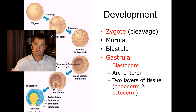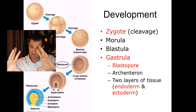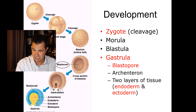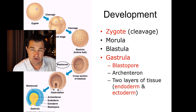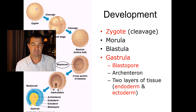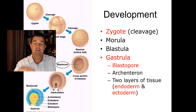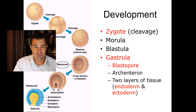As the cells keep dividing, a hollow space forms on the inside — like a balloon with cells on the outside. Then, imagine pushing your thumbs into that balloon inward: that stage is called the gastrula, and the opening where you pushed in is called the blastopore. The outer layer will develop into ectoderm — skin and related tissues — while the inner layer will become endoderm, which forms the digestive system.